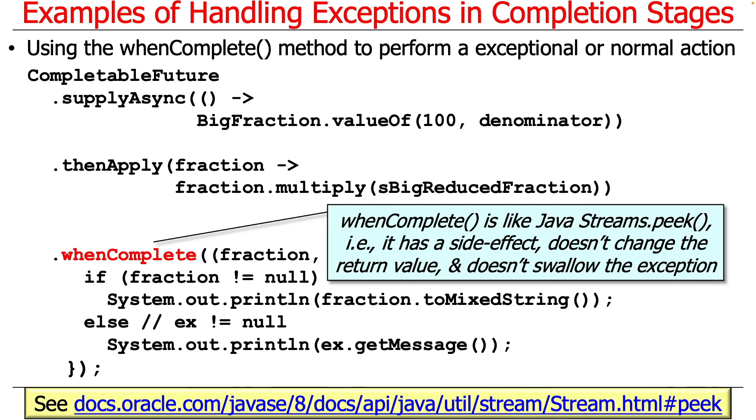WhenComplete is a bit like Java's peek method in the Java streams framework. It has a side effect, but it doesn't make any changes to the return value that comes out of it. It can't change the type, and it does not swallow the exception. That can be a little bit confusing when you first try to use it, because you're like, wait a second, I have my whenComplete method in here, but my program keeps crashing when an exception is thrown. And the answer is that's correct. WhenComplete is just like this method that's used for logging or debugging, and it doesn't really have any changes to the program. It just notes the fact that something occurred.